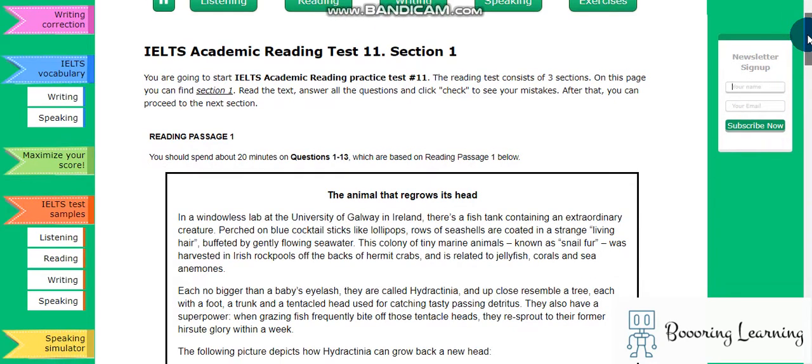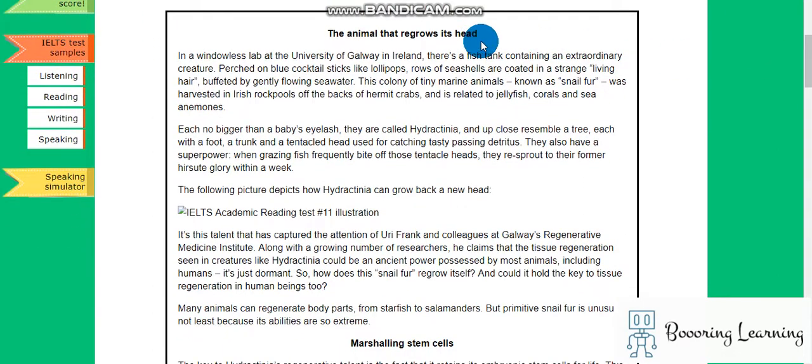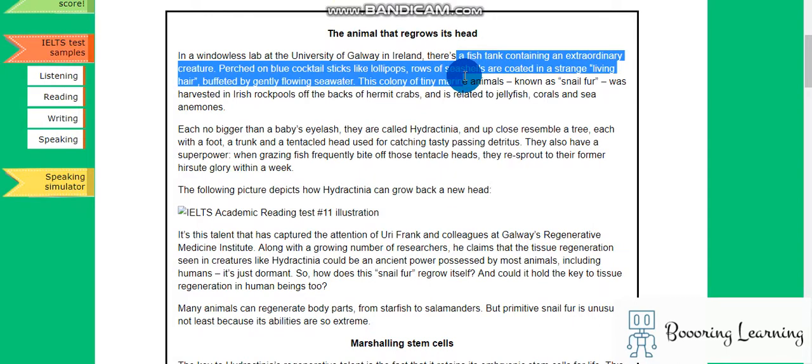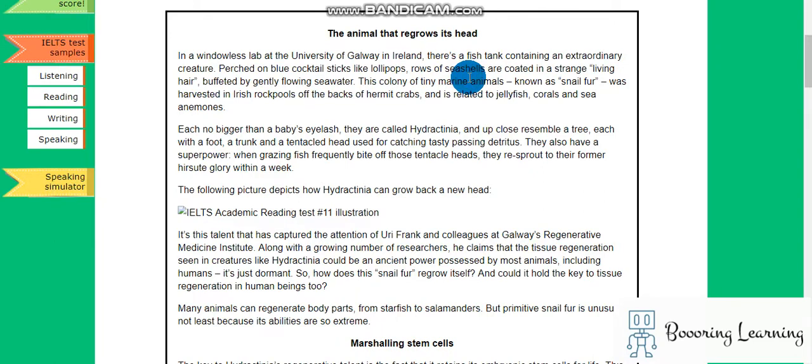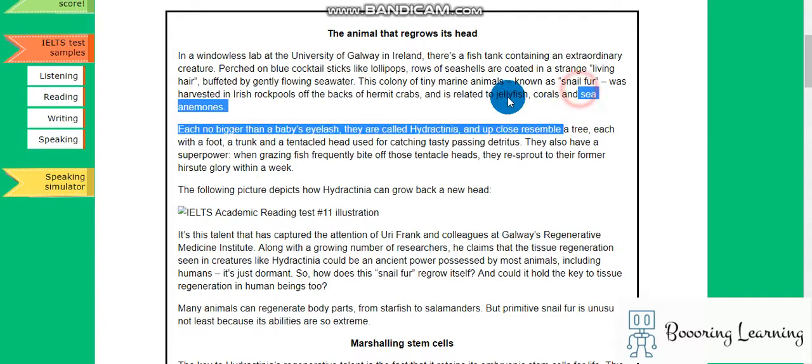Hi, hello. It is us, academic reading test section 1. In a windowless lab at the University of Galway in Ireland, there is a fish tank containing an extraordinary creature. Like lollipops or seashells coated in strange living hair, buffeted by gently flowing seawater, this colony of tiny marine animals known as snail fur was harvested in Irish rock pools off the backs of hermit crabs and is related to jellyfish, corals, and sea anemones.